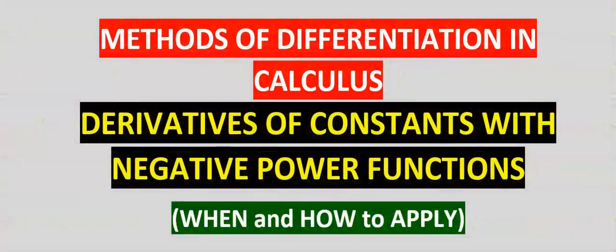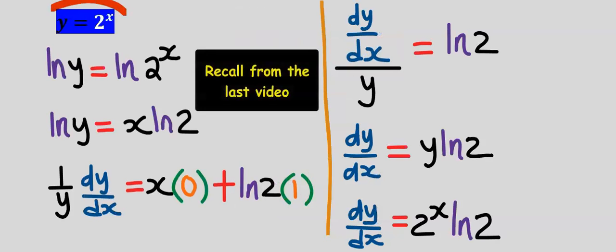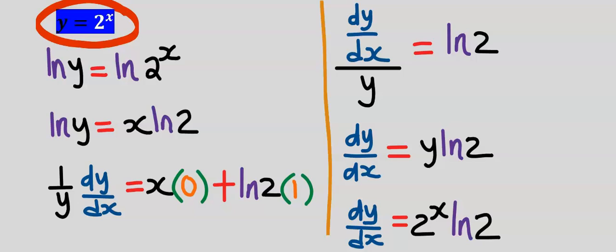In this video we are going to consider the derivatives of constants with negative power functions. Before we consider the first question, let's recap: when you differentiate a constant to the power of x, you get that constant to the power of x multiplied by the natural log of that constant. For example, for 2 to the power of x, the derivative is 2 to the power of x multiplied by the natural log of 2.